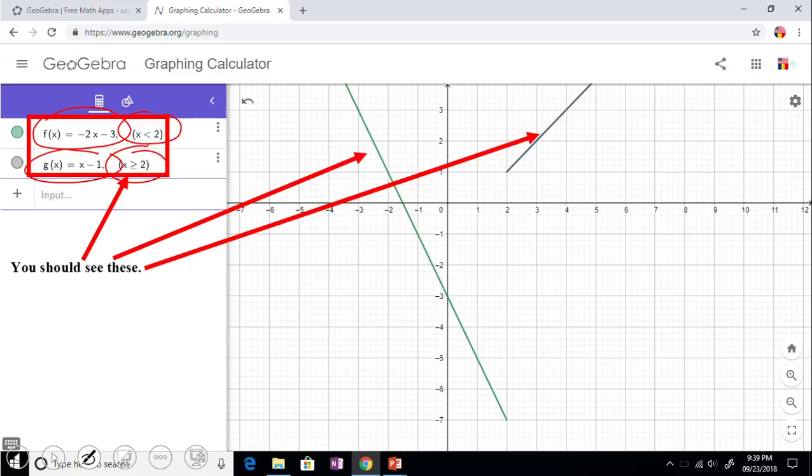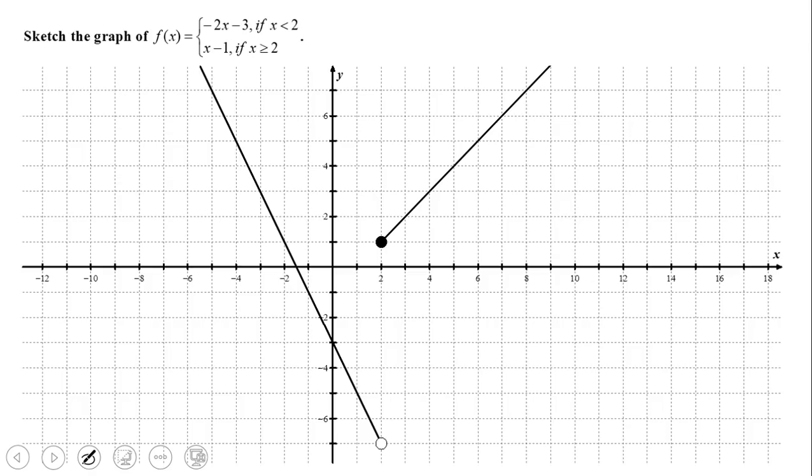Okay, so basically now you can see what we call a piecewise function. You can see what I have right here in GeoGebra. And now I want to mention that empty circle I mentioned in the beginning, right?